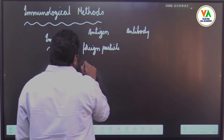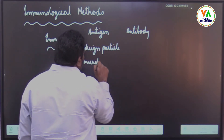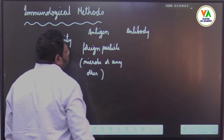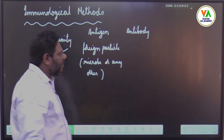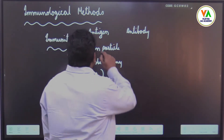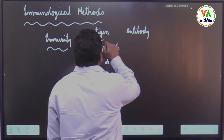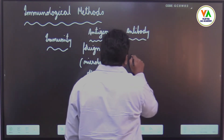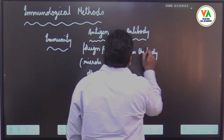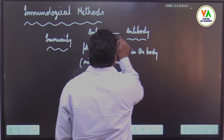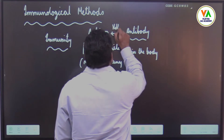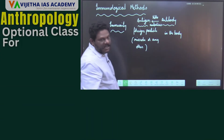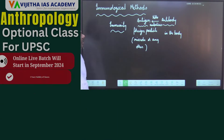It can be a microbe or any other thing like bacteria, virus, or whatever. For every antigen, there is an antibody which is formed inside. Antibody kills or neutralizes the antigen, and there is antigen-antibody specificity.